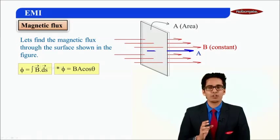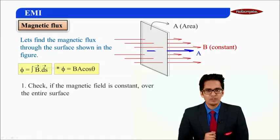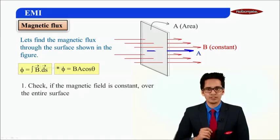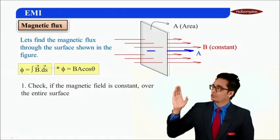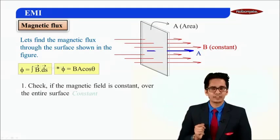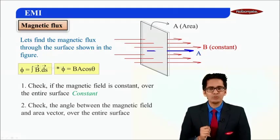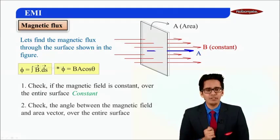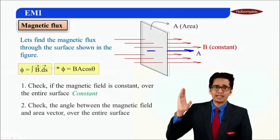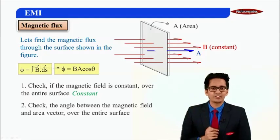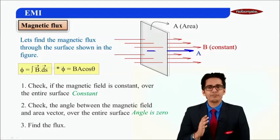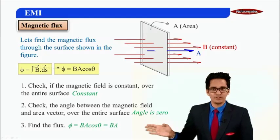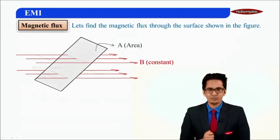Flux has two formulas: ∫B·ds or BA cos θ. To decide which to use, follow three simple steps. First, check if the magnetic field is constant over the entire surface — here B is constant. Second, check the angle between B and the area vector — the angle is 0°, which is also constant. Third, find the flux: flux = BA cos 0° = BA.